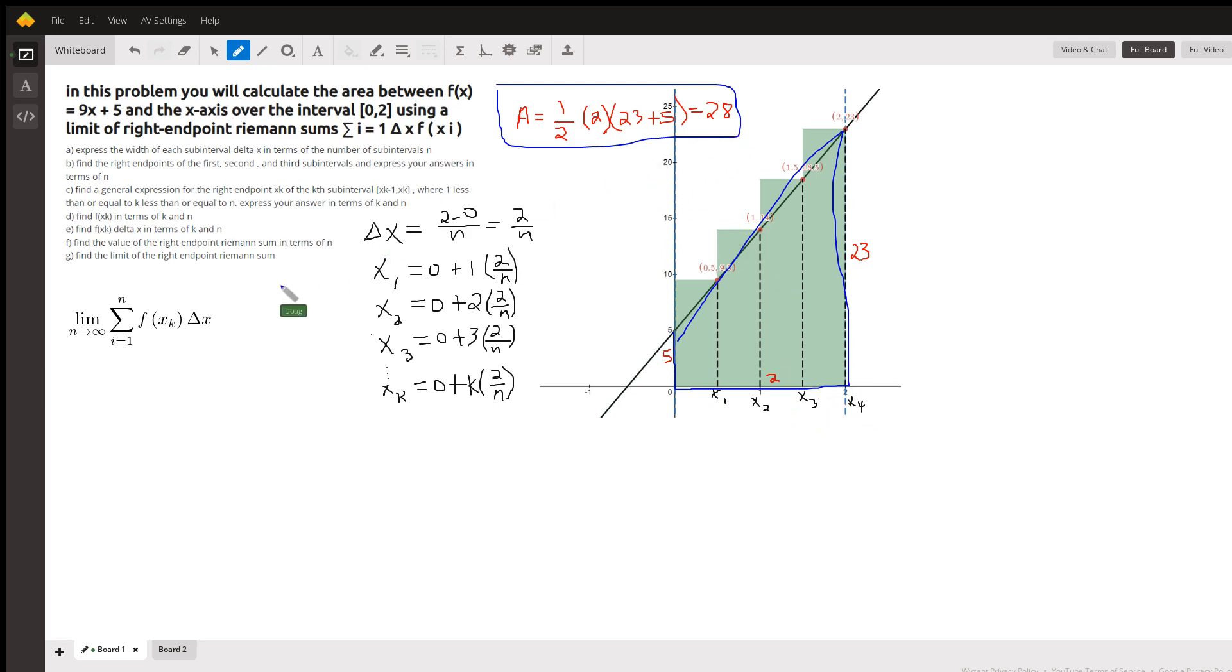Where did they come from? They came by putting 0 into the function and putting 2 into the function, and the base is 2. Okay, so the area is 28. But we want to do it with Riemann sum, so you get the idea.